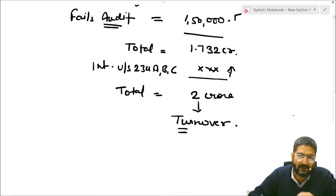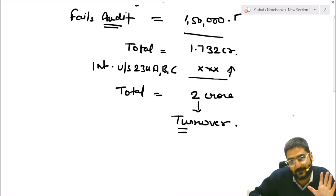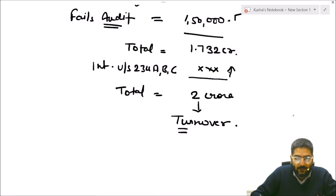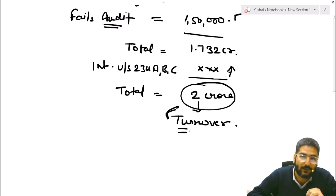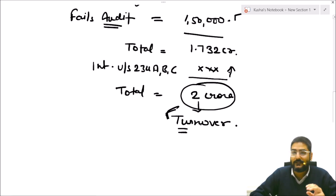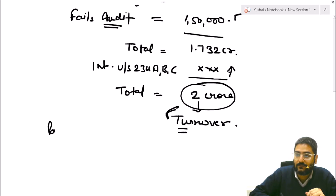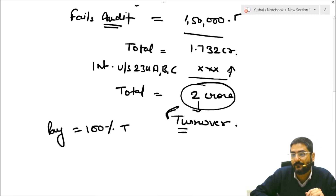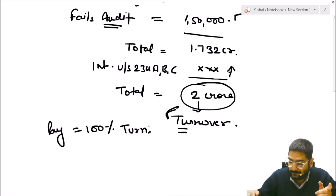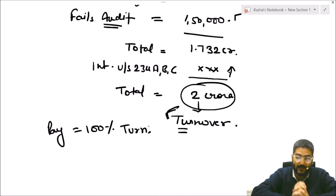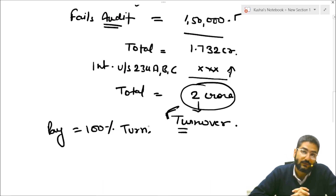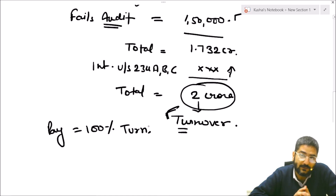This ₹2 crores is equivalent to the entire turnover of your business. If you are in a high-profit-making business, your net profit margin would be maximum 30–40%. So out of ₹2 crores turnover, you made a profit of say ₹80 lakh. But if you do not make any income tax compliance, you have to pay tax plus penalty equivalent to the full turnover — that is ₹2 crores — because you cannot declare your expenses and claim the ₹80 lakh as profit.